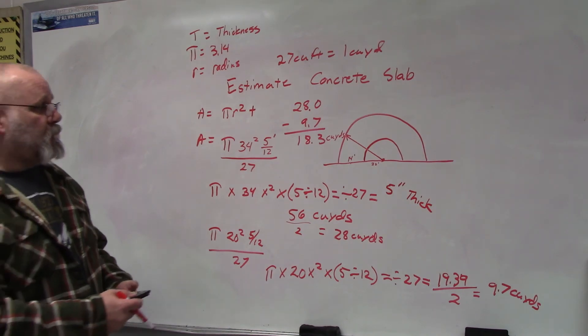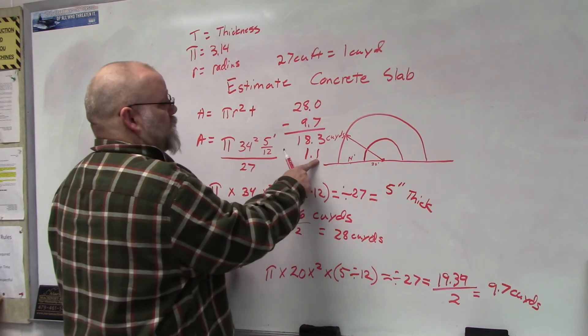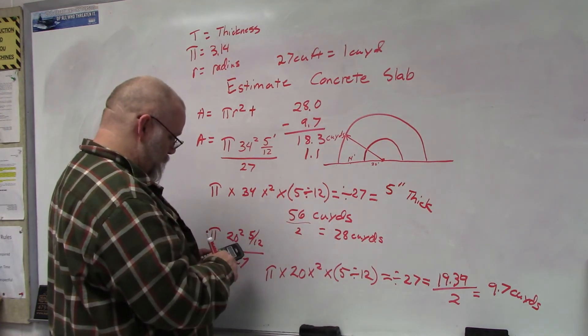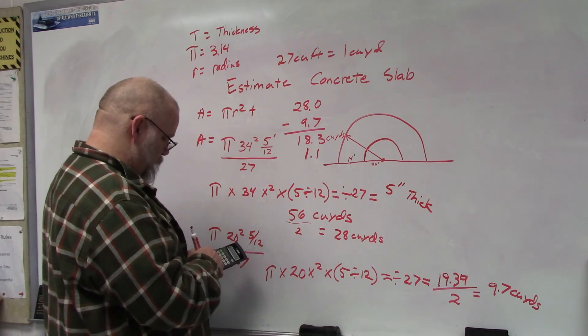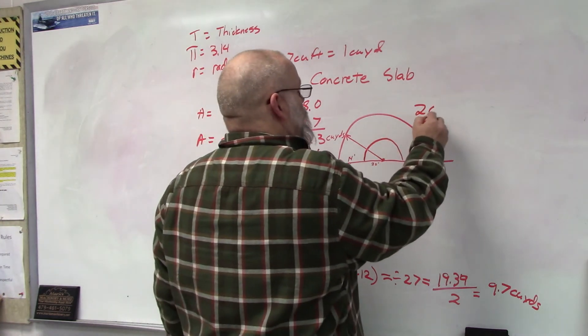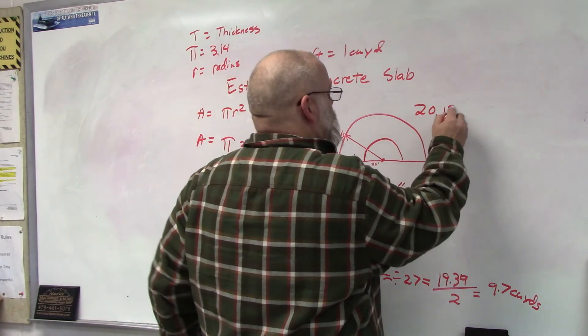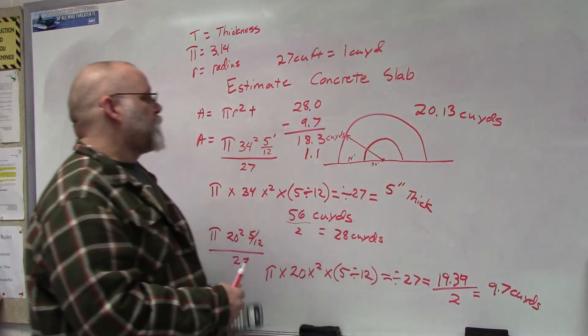And then I add 1.1, which is 10% for waste. 18.3 times 1.1 gives me 20.13 cubic yards.